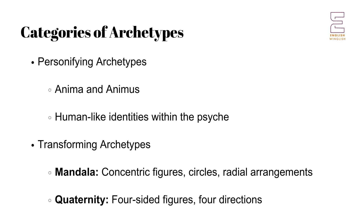The Quaternity involves geometric figures divisible by four, having four sides or four directions. Quaternity symbols often intersect with Mandala symbols such as in flowers and petals focusing on the pistil, and wheels with spokes focusing on the hub, with the cross being a frequent symbol representing the union of a four-sided structure. The Quaternity represents stability, balance, and the integration of opposites, often symbolizing the reconciliation of conflicting elements within the psyche, leading to a more balanced and harmonious self.